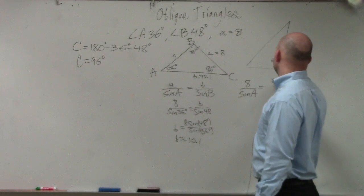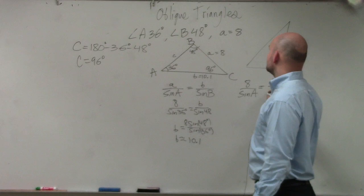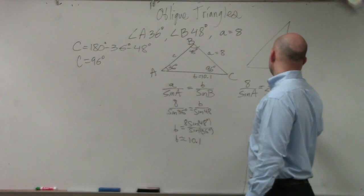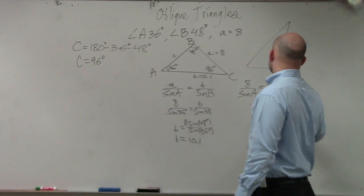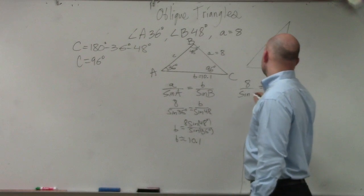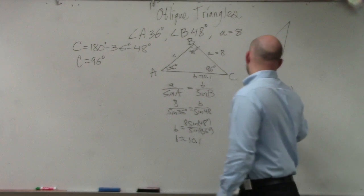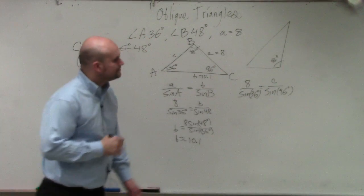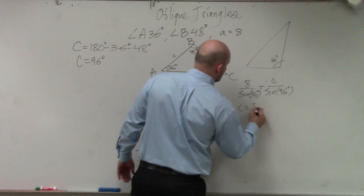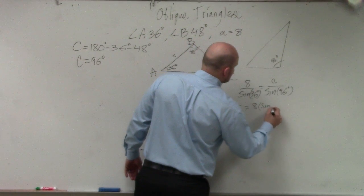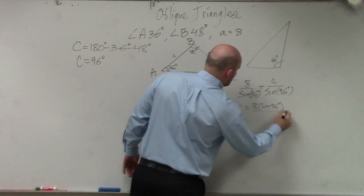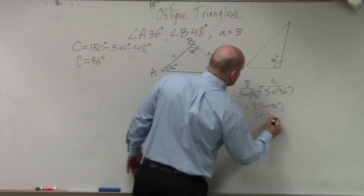So therefore, this is going to be c over sine of C, but sine of 96 degrees. And A is actually 36. So therefore, c is equal to 8 times the sine of 96 degrees, all over the sine of 36 degrees.